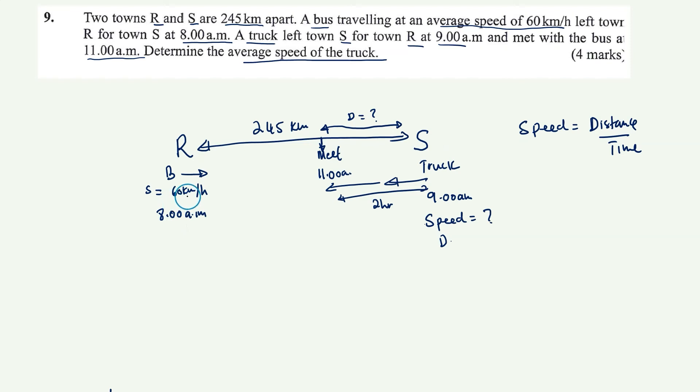Okay, so perhaps a bus can help us with something. The bus has speed. And it's left at 8am. And they met at 11am. So it means this bus has taken three hours to go from R to the meeting point. So T is three hours for the bus. Okay, so the bus can help us find distance because I've got speed and I have time.